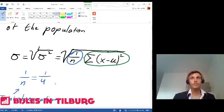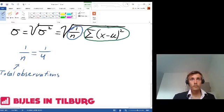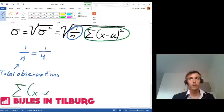The green one, summation of (x minus mu) squared, means this is a summation sign.